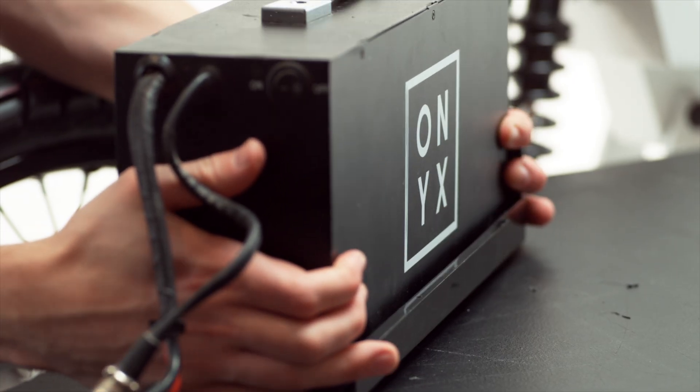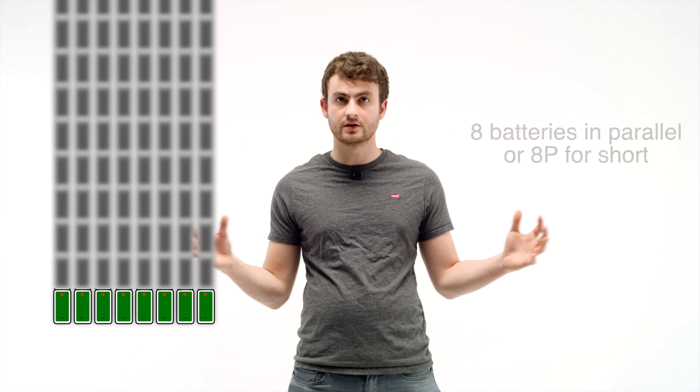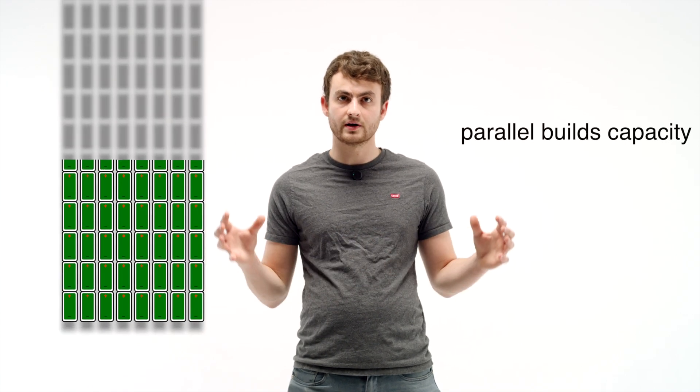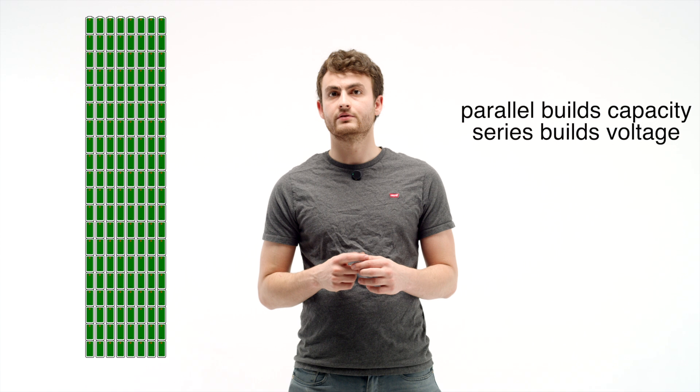Inside of this case here you'll find 20 groups of eight cells. Each cell group has a ton of batteries in parallel so that you can build up the capacity, and then all of those parallel groups are connected in series to build up the voltage.